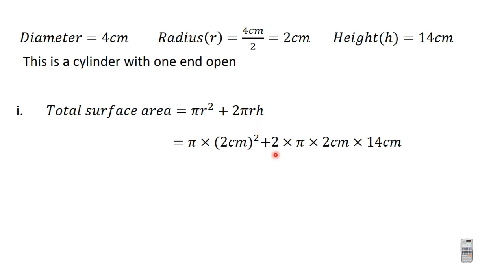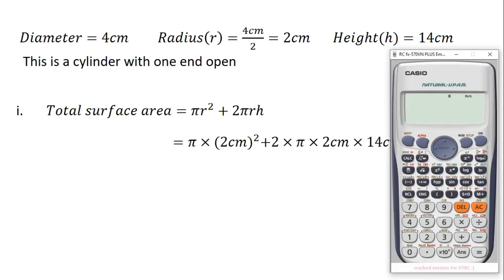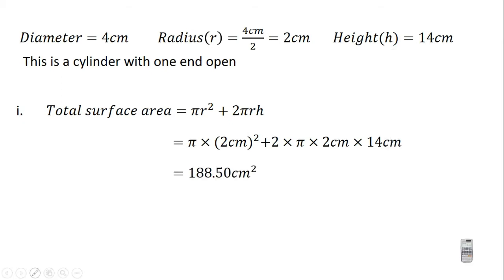So this gives us π × (2 cm)² + 2 × π × 2 cm × 14 cm. On the calculator, press shift π times 2 squared, plus 2 times shift π times 2 times 14. This gives us 60π. The question says to give the answer to two decimal places, so press the S-to-D button to convert to decimal, giving 188.50 cm². The total surface area of this cylinder is 188.50 cm².